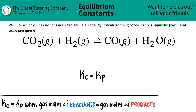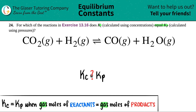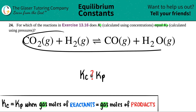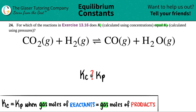So how are we going to do that? If Kc equals Kp, that means the gas moles of the reactants equal the gas moles of the products. But we're only talking about gases here. So the first thing I would suggest is to look at your balanced equation just to make sure you're only looking at the gases.